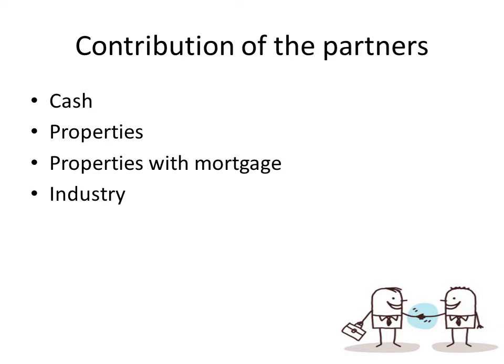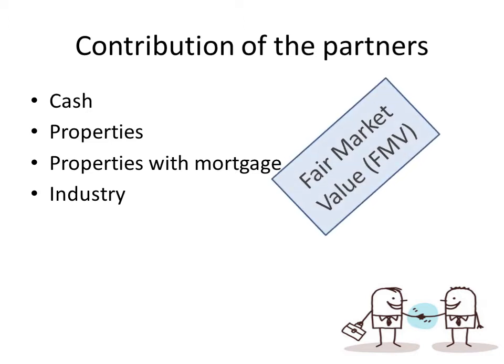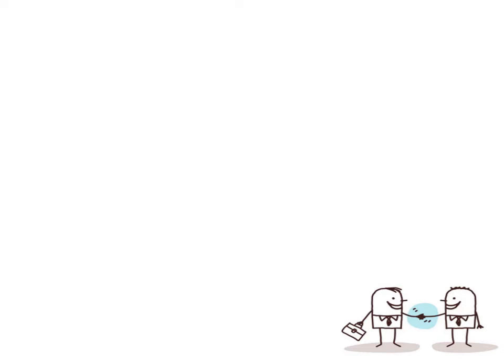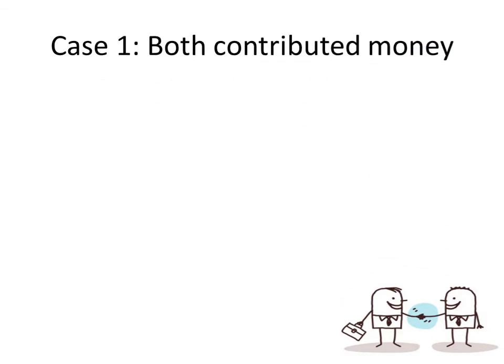We also have industry or services as a contribution. For the valuation of properties and mortgage, it will always be the fair market value. But for industry, since you cannot quantify the skills and hours of that person, it is not recorded in the partnership. So for Case 1, both partners contributed money. We don't have any accounting problem because money has its fair market value and is not significantly affected by changes in value.